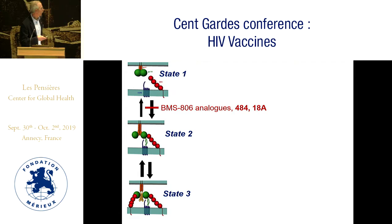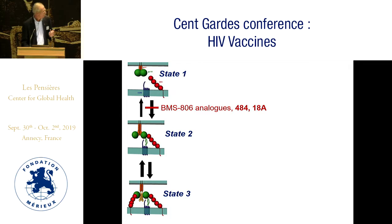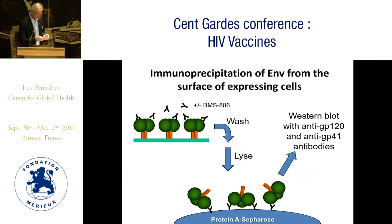Early studies of inhibitors of HIV entry used some BMS compounds. We discovered other analogs in a random screen in my lab, and they all work the same way — essentially they decrease the transitions of the envelope from state 1 to state 2. That would suggest those small molecules should be able to stabilize envelope in state 1, or at least enrich preparations in state 1. There is some SM-FRET data which supports that hypothesis, but we also wanted to look at envelope glycoprotein antigenicity in the presence of these compounds and ask, do they really stabilize state 1?